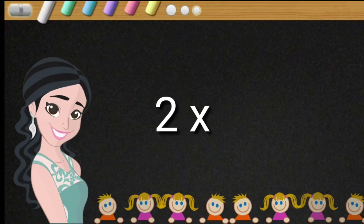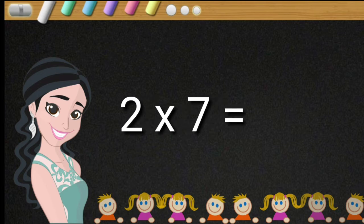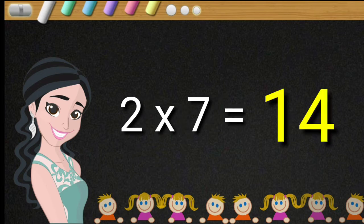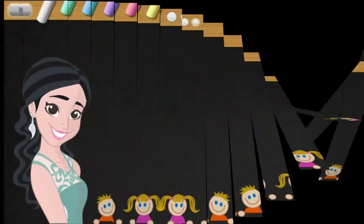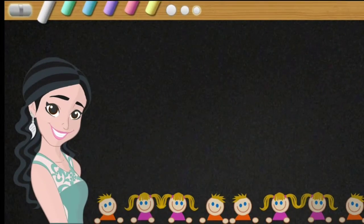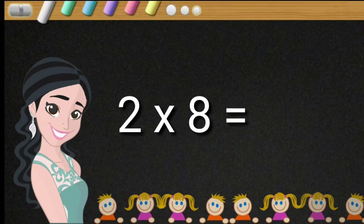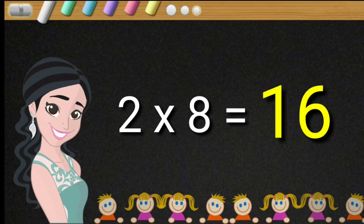Two sevens are fourteen. Two sevens are fourteen. Two eights are sixteen. Two eights are sixteen.